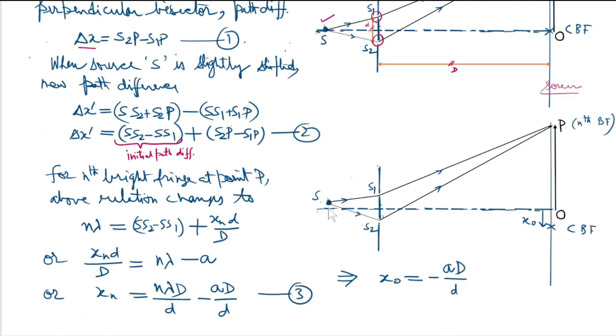When source S is slightly shifted upwards, then there is initial path difference as well, and hence the overall path difference as the waves meet at point P should be given by Δx' equals S2P minus S1P. It could be written as Δx' equals S·S2 minus S·S1 plus S2P minus S1P.